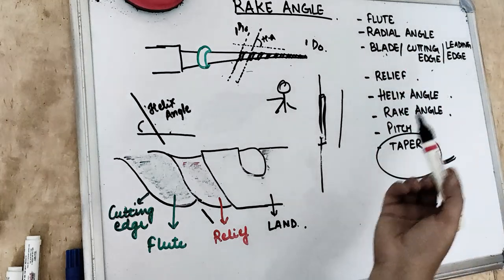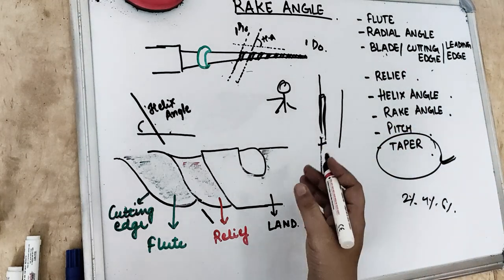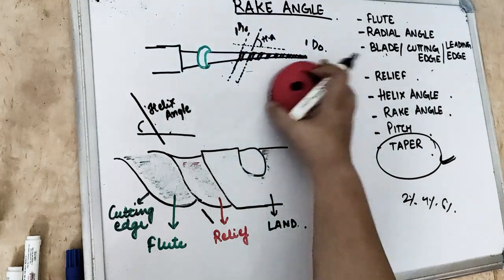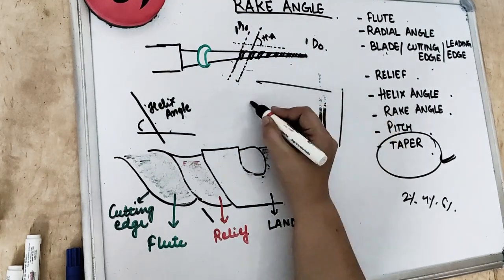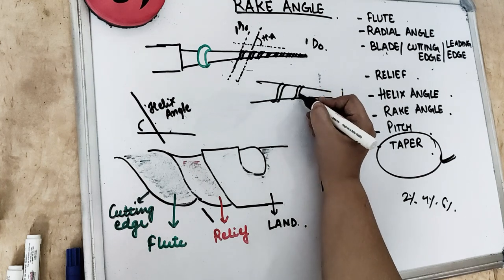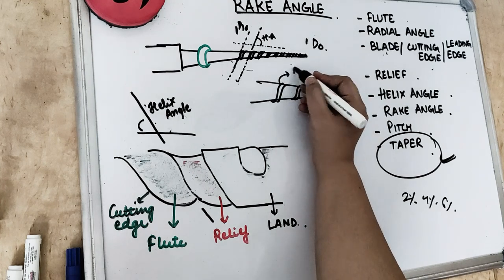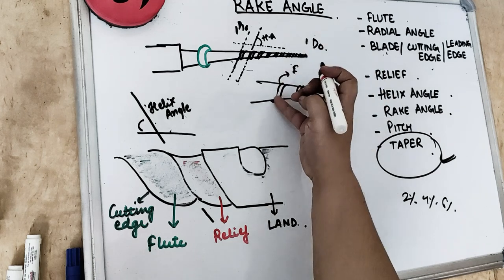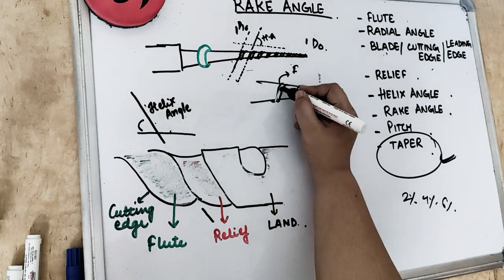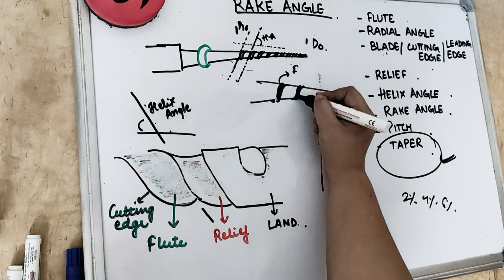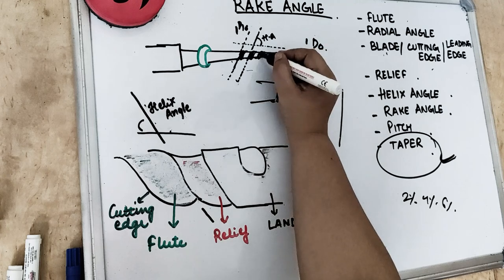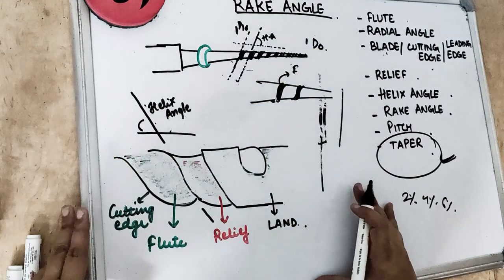Talking about the flute — flute is the groove which is present on the working surface of the file. Can you see these grooves? This is our endodontic file, and these which we have drawn like this are our flutes. Basically this is the cutting edge, and what is adjacent to the cutting edge is our flute. So this part is the flute.